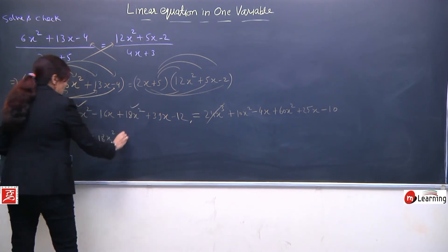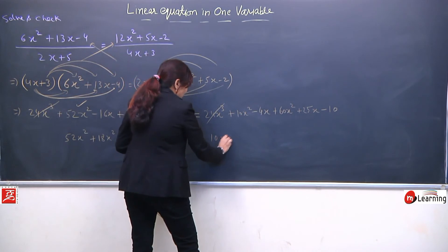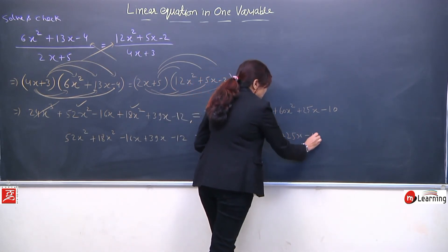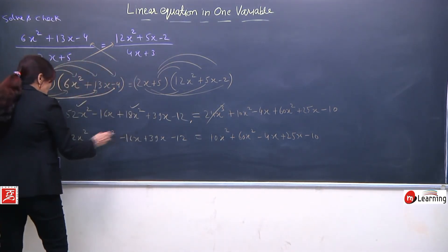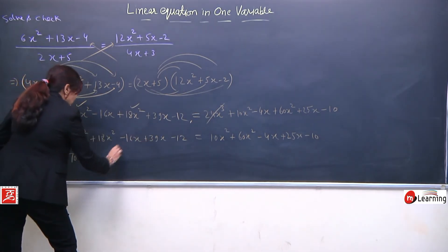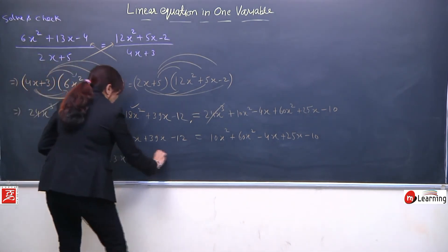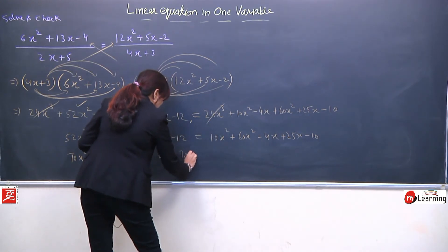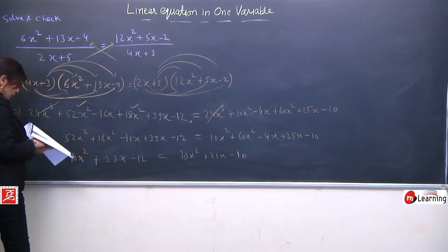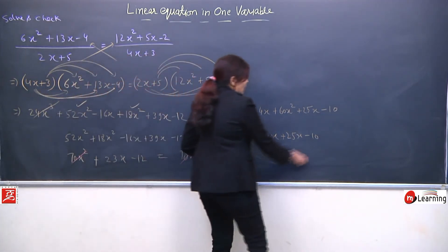x² terms collect karein: 52x² plus 18x² on LHS. x terms: minus 16x plus 39x on LHS, minus 12 constant. Right side: 10x² plus 60x² minus 4x plus 25x minus 10. Like terms collect karne ke baad: 70x² on LHS, 70x² on RHS — cancel ho jaate hain. Bacha: 23x minus 12 equal to 21x minus 10.